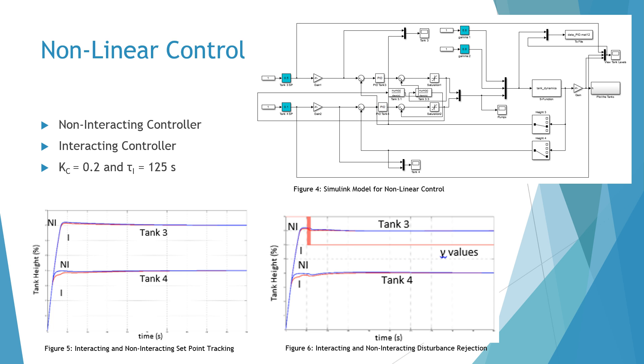We also wanted to see if the controller parameters would be approximately the same. Our controller gain was 0.2 and our tau i was 125 seconds after tuning. Part of the reason for the difference was unit differences and the non-linearity of the model.